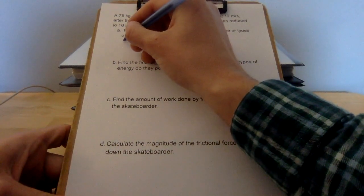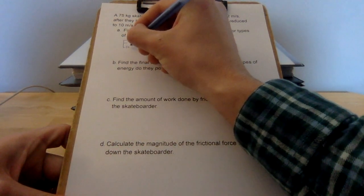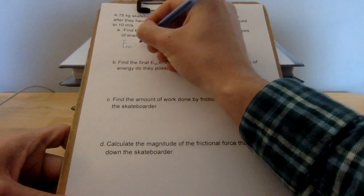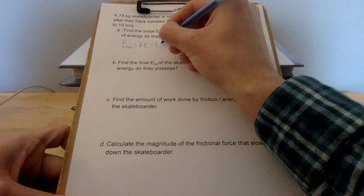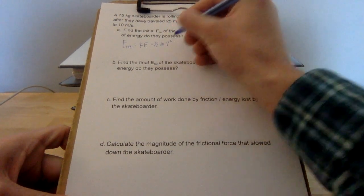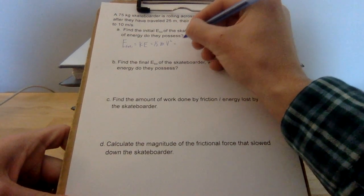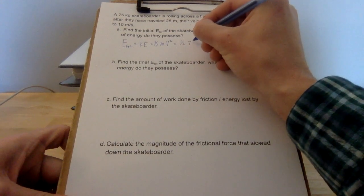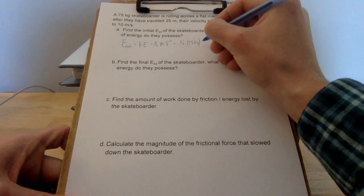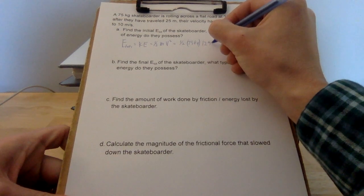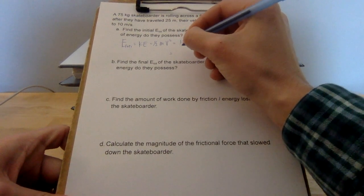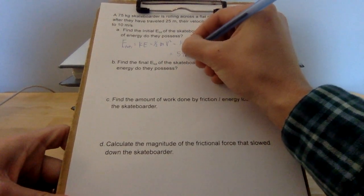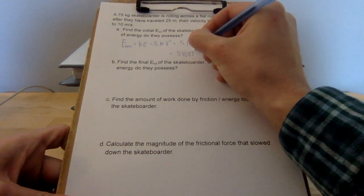So the initial total energy, I'm going to call that e-total 1, is all kinetic, which is 1 half mv squared, as you know, and plugging in numbers, we get 5,400 joules of energy.